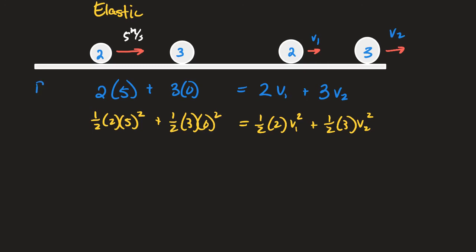With a momentum conservation equation and a kinetic energy conservation equation, I have two equations and two unknowns — it can be solved. It's tedious because it involves squares. The only way to do it with the math you have is to solve the momentum equation for one velocity and plug it into the energy equation. It is tedious and monotonous, and even at peak math skills, that's probably ten minutes of work.